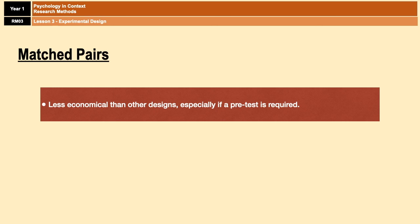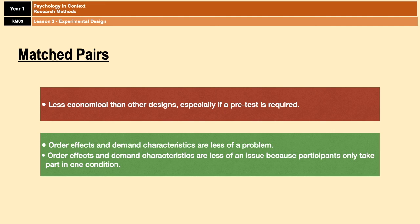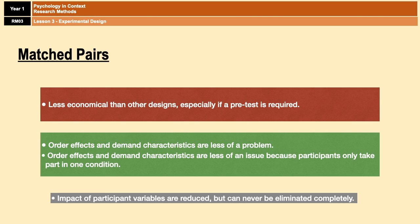Finally, matched pairs. A downside is that it is much less economical than the other designs, especially if you need to conduct a pre-test — you need more resources, more time, and more participants. On the upside, order effects and demand characteristics are less of a problem because participants only take part in one condition. Regarding participant variables, it's a bit of a grey area: they are reduced because participants are matched on a relevant trait, but they can never be eliminated completely — it's never going to be a perfect match.